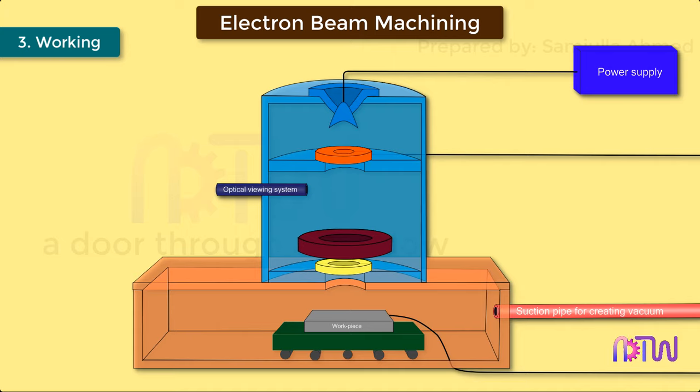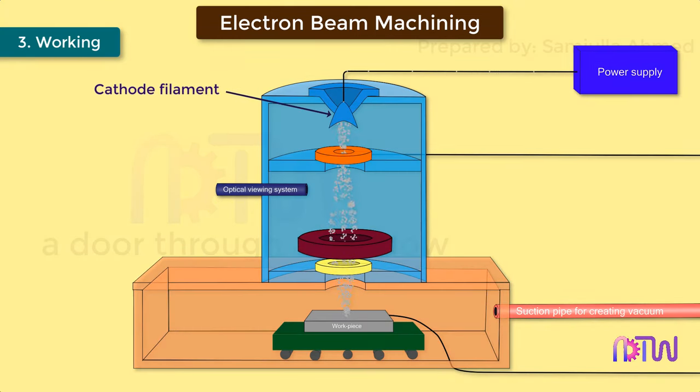Working: When a high voltage supply is applied to the cathode filament, it generates the electrons, this electrons move toward the anode at very high velocity. After passing through the anode, the beam of electron is made to pass through magnetic lenses, where diverging and low-energy electrons are absorbed, and only converging beam of electron is made to pass through it, thus forming high-quality electron beam.